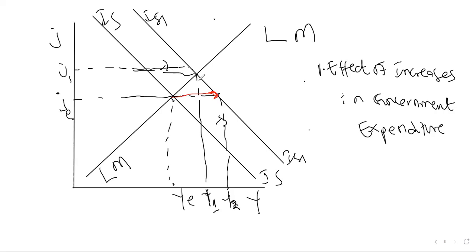Remember that money demand is a function of transactions, income, or output — I told you that earlier. Once income has increased, money demand is going to increase. Now if money demand increases, holding money supply constant, the interest rate is going to rise.